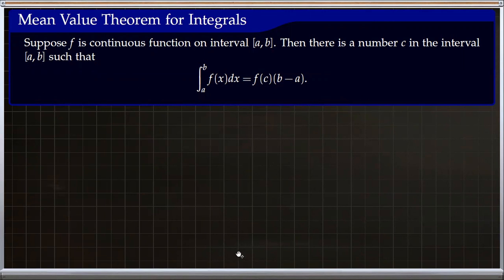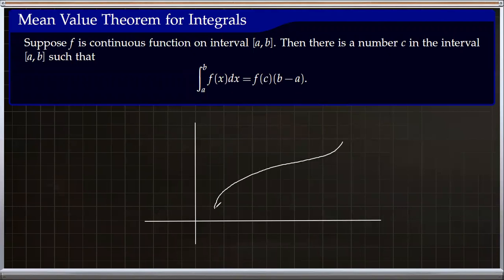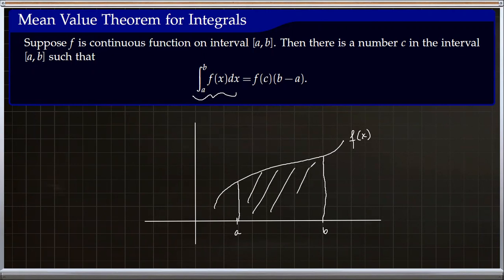Let's take a look at what this means. If we have a function whose graph looks like this, with a somewhere here and b here, then the left side of this equation is the area under the curve from a to b — this area is the value of the integral from a to b of the function.